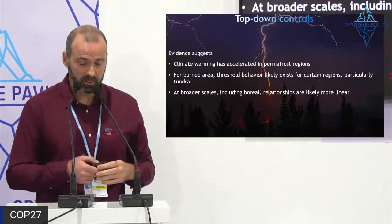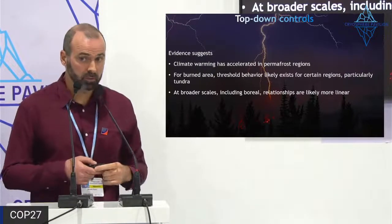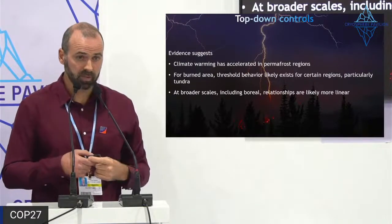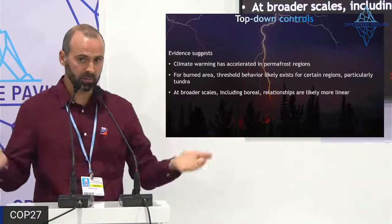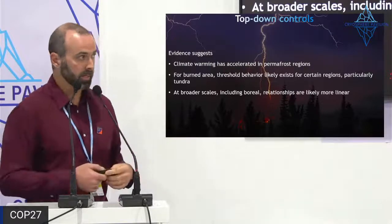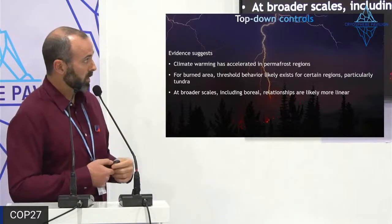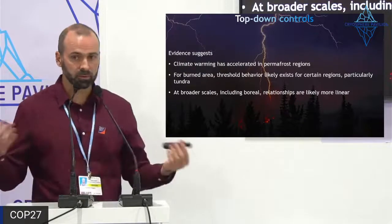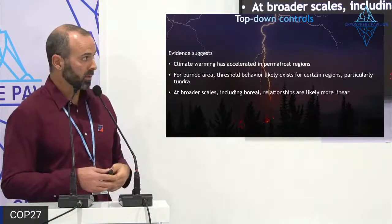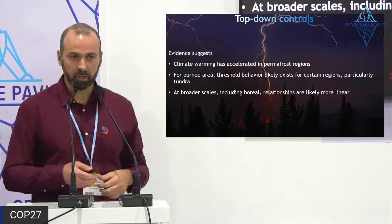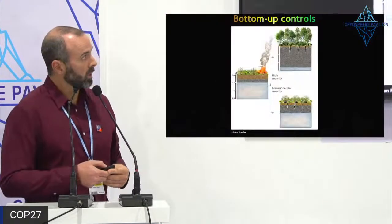My take on burned area driven by top-down controls: climate warming is accelerating. We are seeing threshold behavior in tundra regions that have not burned very frequently historically — they are crossing thresholds and may burn a lot more. But at broader scales including the boreal, which accounts for the vast majority of burned area, the relationships are likely a lot more linear.